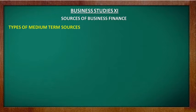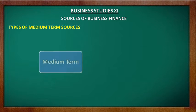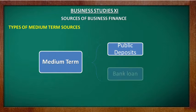Medium-term sources are requirements for a period of more than 1 year but less than 5 years. Examples include public deposits and bank loans — specifically, loans taken for a period of less than 5 years but more than 1 year are considered medium-term sources of finance.